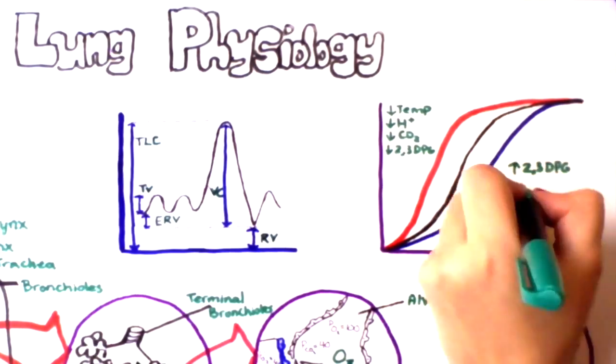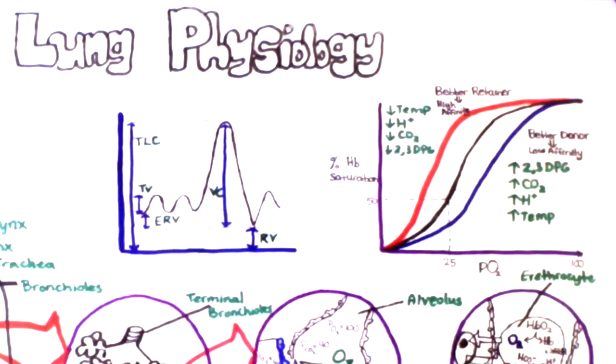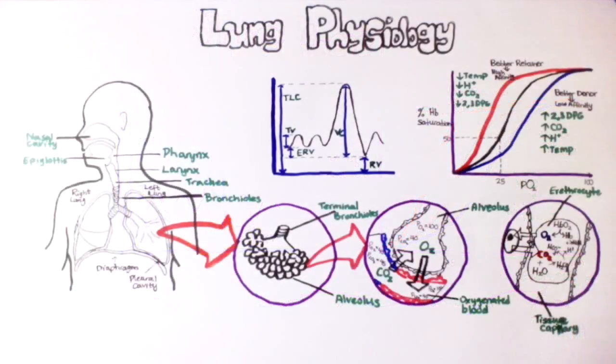Hemoglobin becomes a better retainer and has a higher affinity for oxygen during low temperatures, low hydrogen ion concentrations, low CO2 concentrations, as well as low 2,3-DPG concentrations. However, hemoglobin becomes a better donor or has a lower affinity when the concentration of 2,3-DPG increases, concentration of CO2 increases, or concentration of hydrogen ion increases, or the temperature increases.